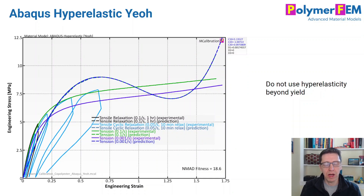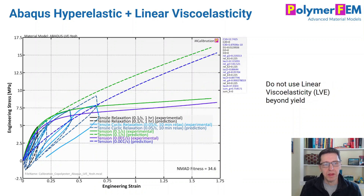If you try to use a hyper-elastic material model, it won't work very well either. Here's the best I could do with the Yeoh hyper-elastic model, a third-order polynomial type model — it looks really crazy and the error is way too large. Don't use hyper-elasticity beyond yield for any thermoplastic or rubber material. Similarly, a hyper-elastic model with linear viscoelasticity doesn't work at all here — it's terrible. Linear viscoelasticity should not be used beyond yield for any plastic material either.